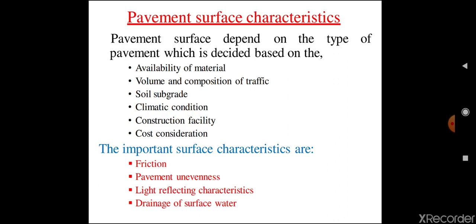Based on these things, the pavement surface characteristics depend. Firstly, availability of material — if good quality material is available near the construction site, then we can expect the pavement surface to be good and have sufficient strength to support the load coming on the pavement from the vehicles. Then, volume and composition of traffic.